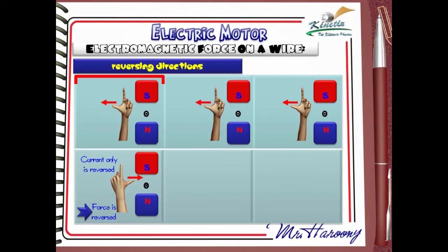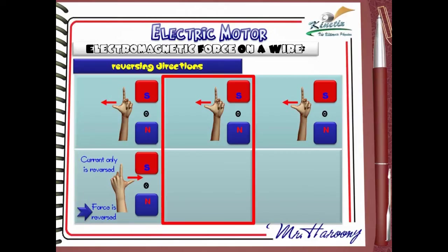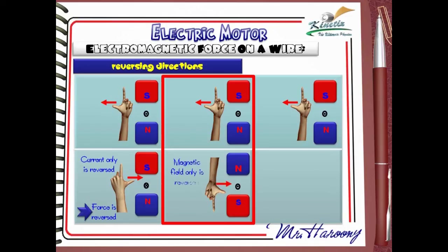In the second case, we reverse the magnetic field only while the current is maintained the same. Fleming's Left Hand Rule shows that the direction of pushing will be to the right. So if the magnetic field alone is reversed, the force direction is also reversed.